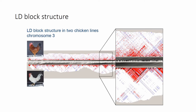Therefore this part of the genome is quite well conserved with very high pairwise LD. The same genes are present in the other breed, but in that breed they are not important or not selected for, so we do not see such a strong LD block occurring there.